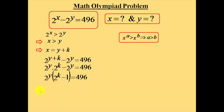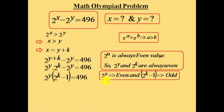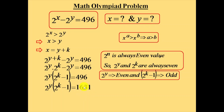Now we know that 2 raised to any power is always an even value — so 2 power y is always even, and 2 power x is always even. When we subtract 1 from 2 power k, which is an even number, we will be getting an odd number. So 2 power y is even and 2 power k minus 1 is odd. Therefore, we need to write 496 as a product of an even and an odd number, like 16 into 31. 16 is an even number and 31 is an odd number, and their product is 496.